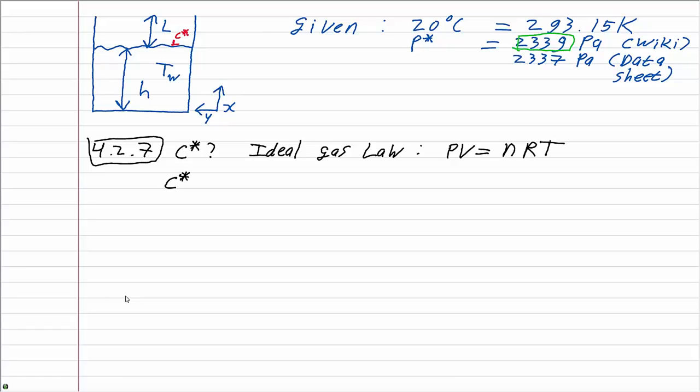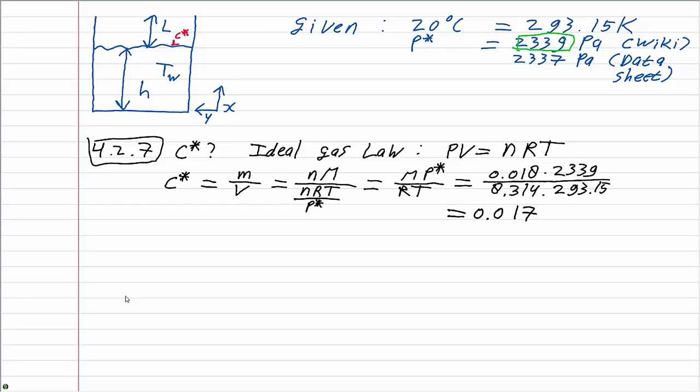The required concentration, which we will call C star, is equal to the mass divided by the volume. The mass is the amount of moles times the molar mass. The volume we acquire by rewriting the ideal gas law, and then if we fill in the numbers we arrive at the concentration of 0.017 kilograms per cubic meter.